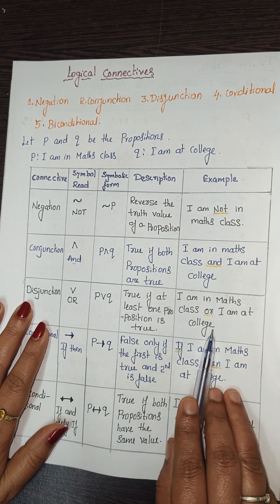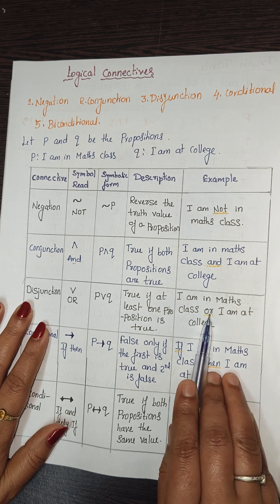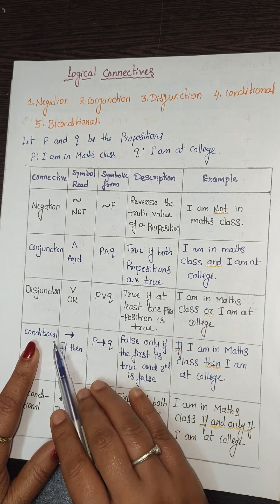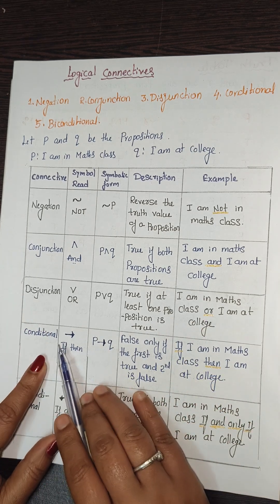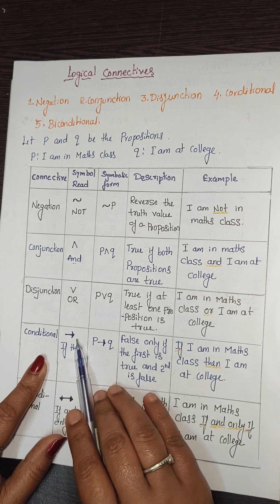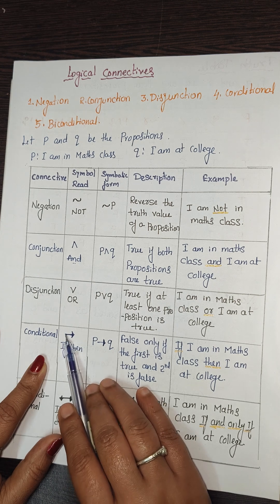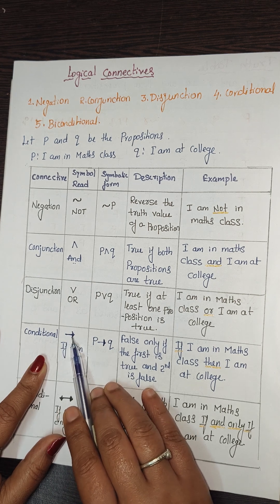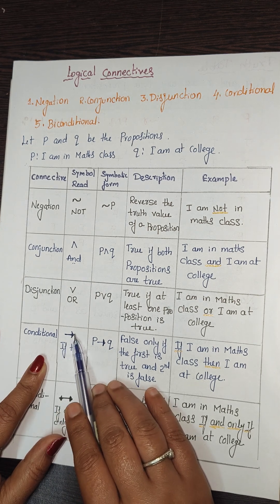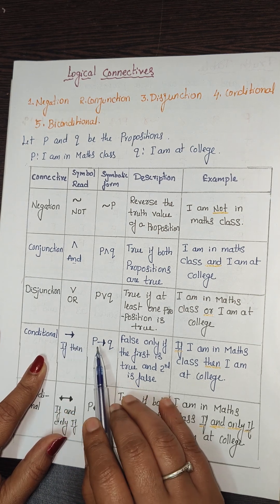An example of disjunction: 'I am in maths class or I am at college.' Here the connective is 'or.'